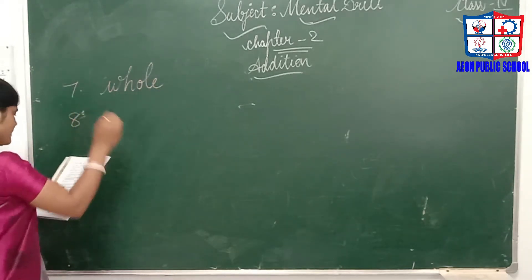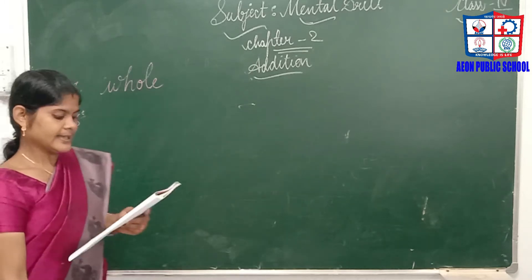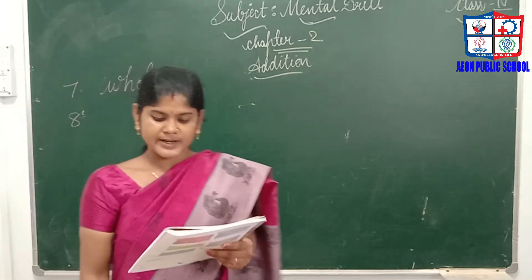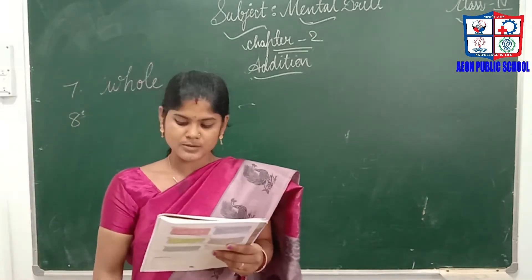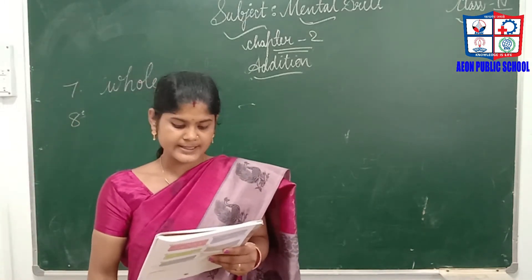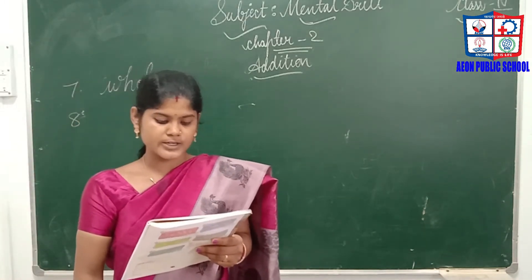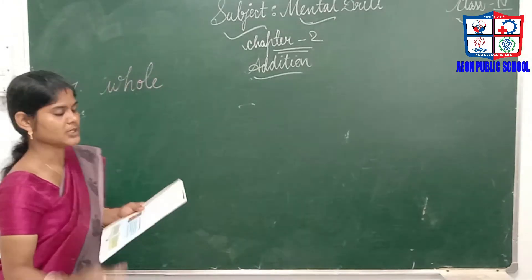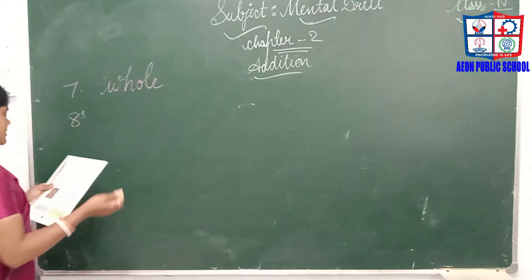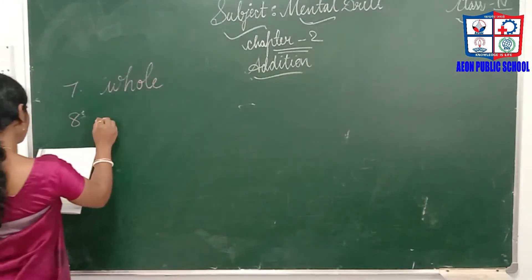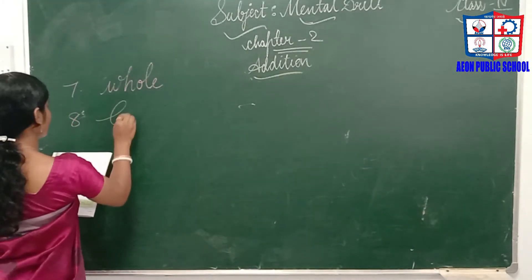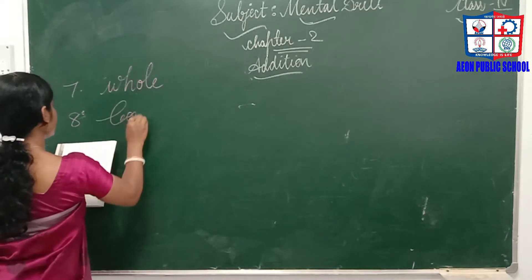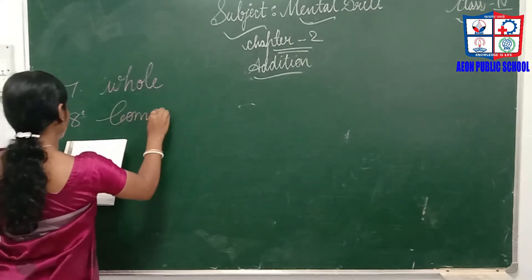The eighth one: the dash property of addition — two numbers added in any order give the same result. If you interchange the numbers it gives the same result; that property is called the commutative property.